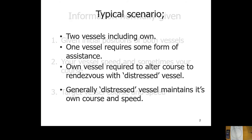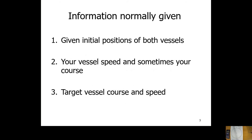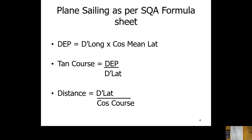Generally in the question you will be given the positions of both vessels, the speed and possibly the course of your own vessel or the vessel that's going to be altering course — that course is kind of a red herring. You'll also be given the target vessel's course and speed. We can usually do this with plain sailing formula because we're generally not going more than 600 miles, though sometimes Mercator may be required.